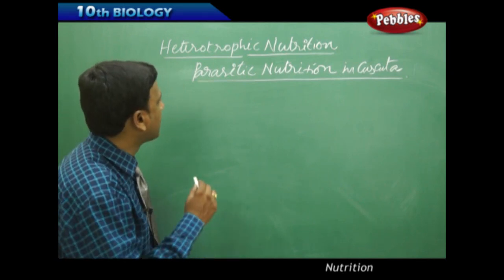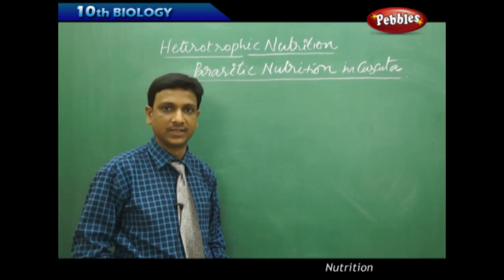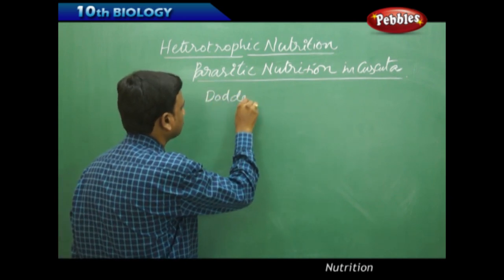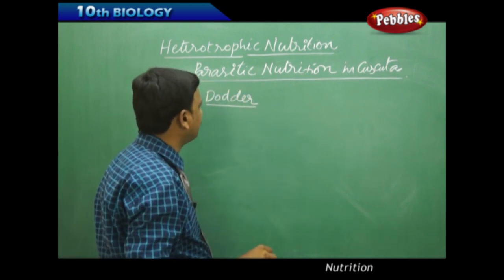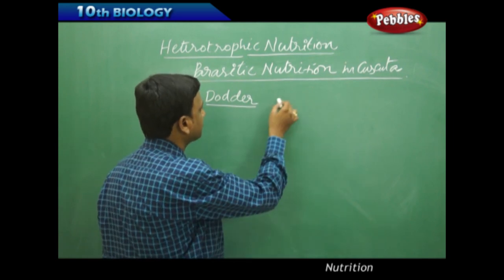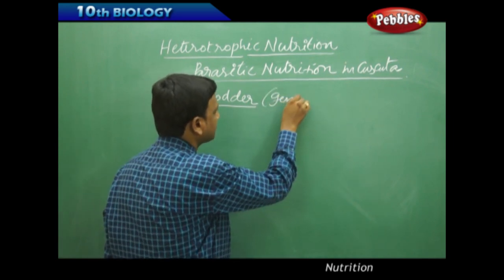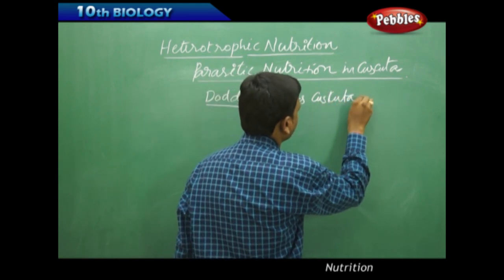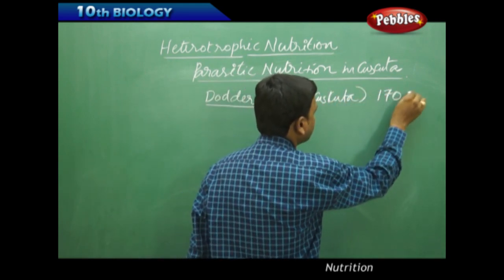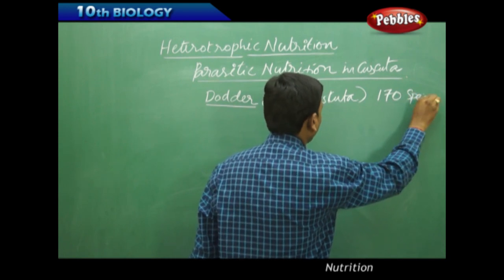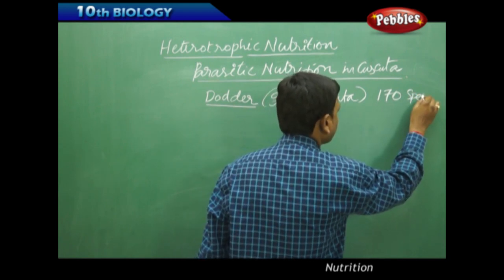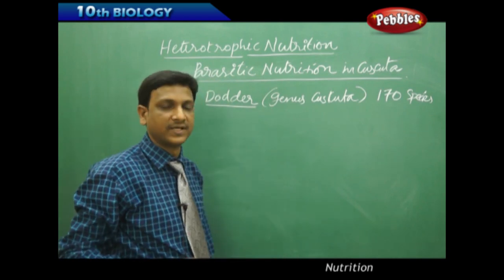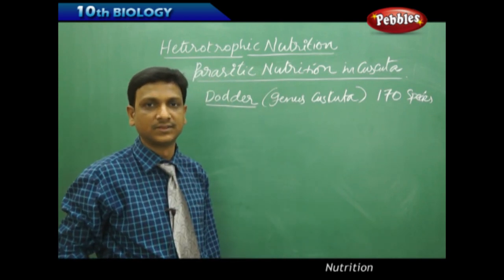Now look at the parasitic nutrition in Cascuta. Dodder is a parasitic plant which belongs to the genus Cascuta. There are around 170 species found in this genus. Dodder is an example of a parasitic plant.